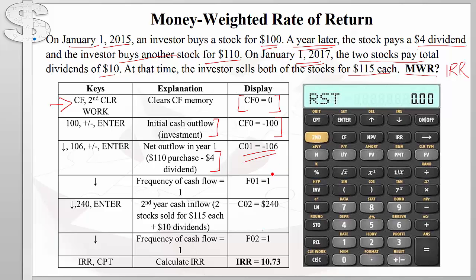The calculator will show the frequency of the cash flow as 1, which is correct because this cash flow occurs only once. We simply hit the down button without changing the frequency, then enter the cash flow for the next year: we hit 240 and do not hit the minus button.